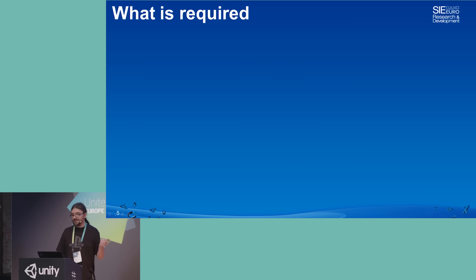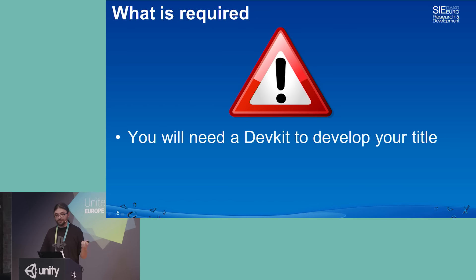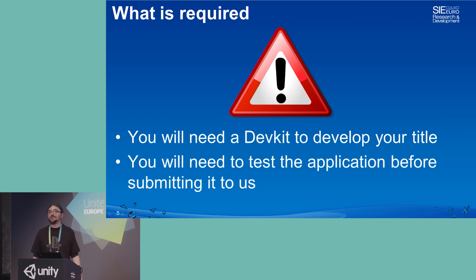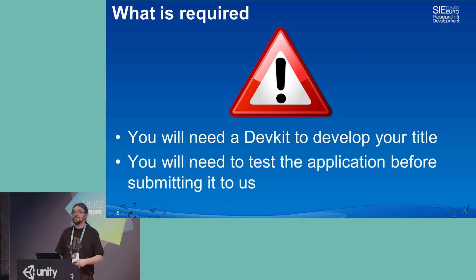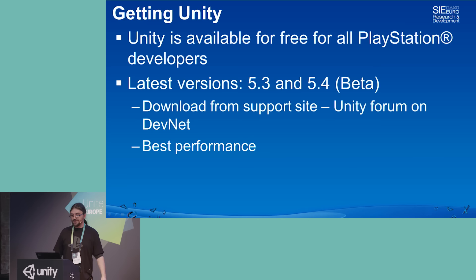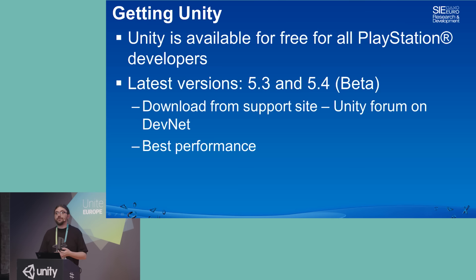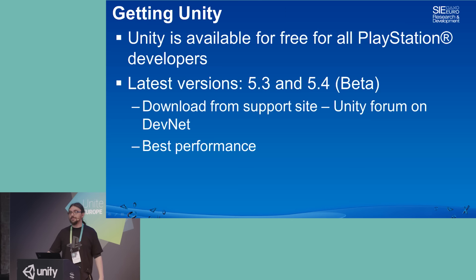There are some things still required. You will need a dev kit to develop your game, and you will need to test the application before submitting it to us. We also have people that submit games without testing them, so that's not going to work very well. In terms of getting Unity, it's available for free for all PlayStation developers. The latest versions available are 5.3 and 5.4 beta, downloadable from our support site once registered. You'll also have Unity forum support directly on DevNet.